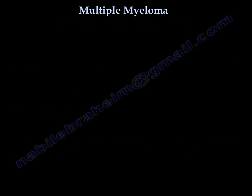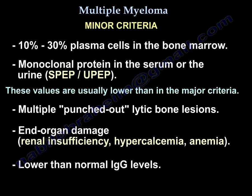Minor criteria include 10–30% plasma cells in bone marrow, monoclonal protein in serum or urine (SPEP or UPEP) at values lower than major criteria, lytic bone lesions, and end-organ damage such as renal insufficiency, hypercalcemia, anemia, or lower-than-normal IgG levels.